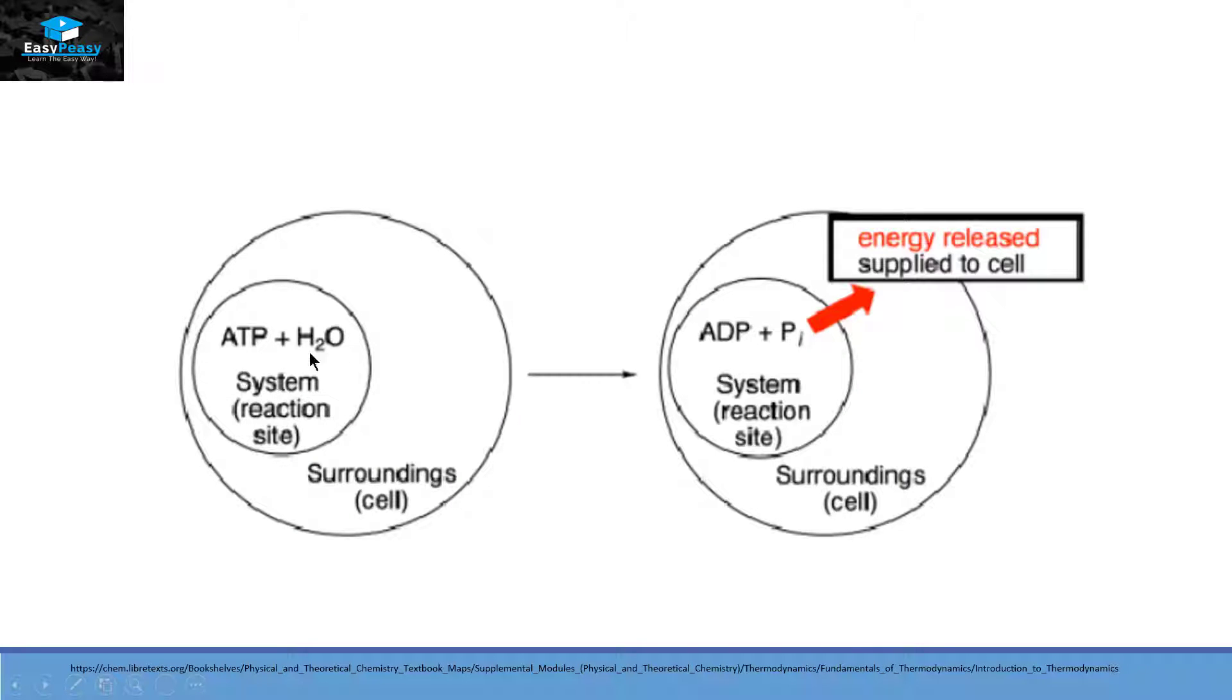ATP is generated inside the mitochondria and then it moves outside and releases energy and converts itself into ADP that stands for Adenosine Diphosphate with an inorganic phosphate group.